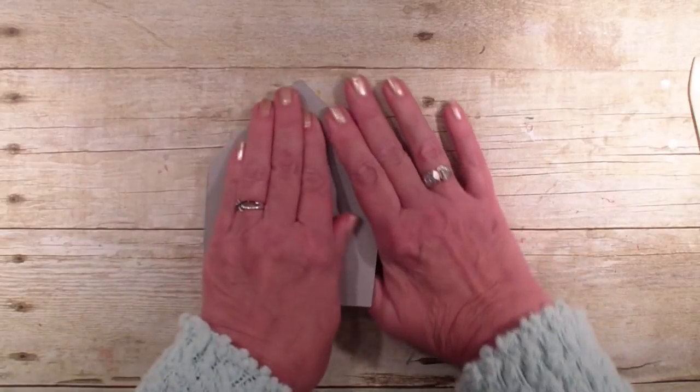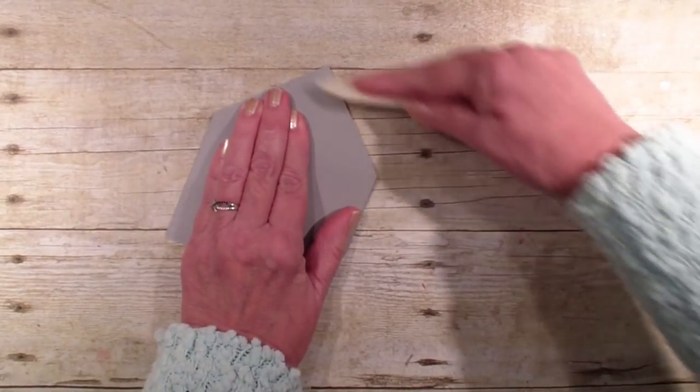So we're going to just fold those down like so. Again, you want to make sure those score lines are nice and crisp.